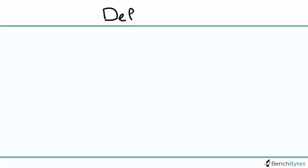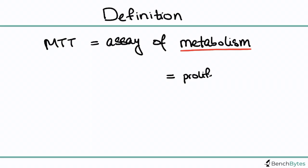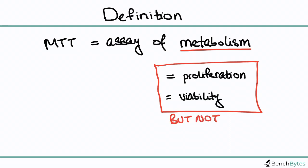Let's get started by talking about the definition of the assay. I want you to always think about the MTT assay as an assay that actually measures metabolism. This is really important because while metabolism often correlates very well with viability and proliferation, it's important to remember that viability and proliferation aren't always 100% correlated with metabolism — this assay is really measuring metabolism, and we're using that as a proxy for viability and proliferation.